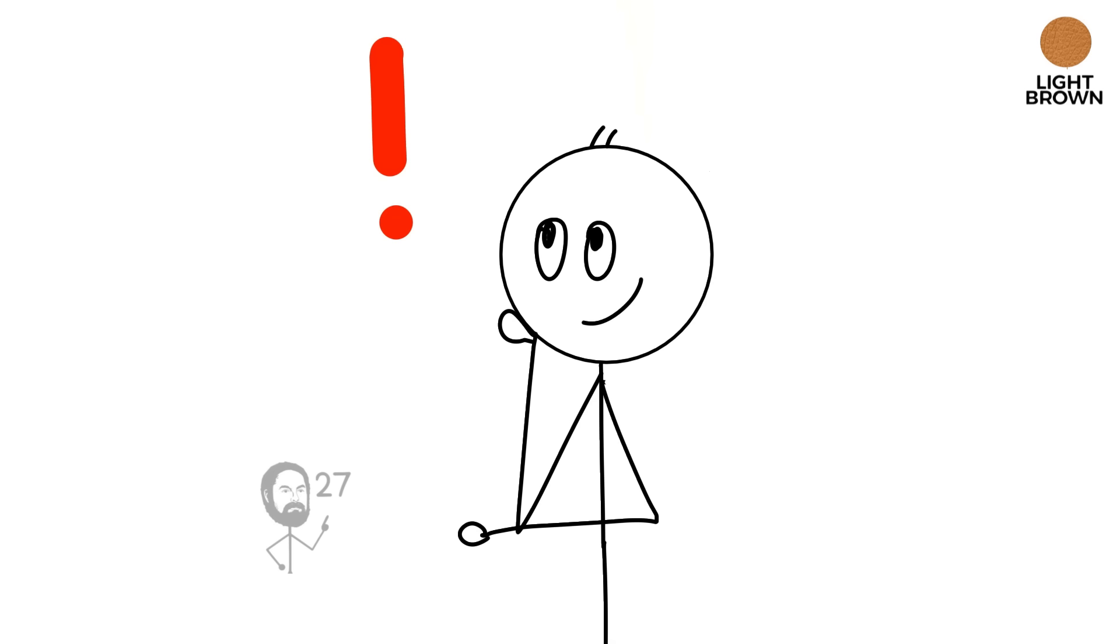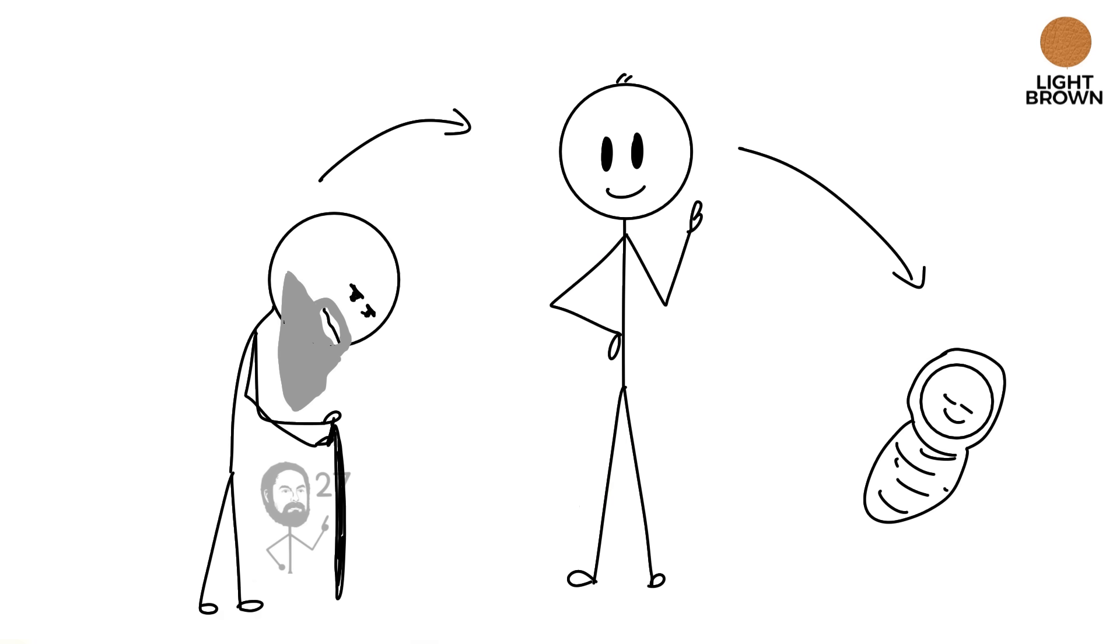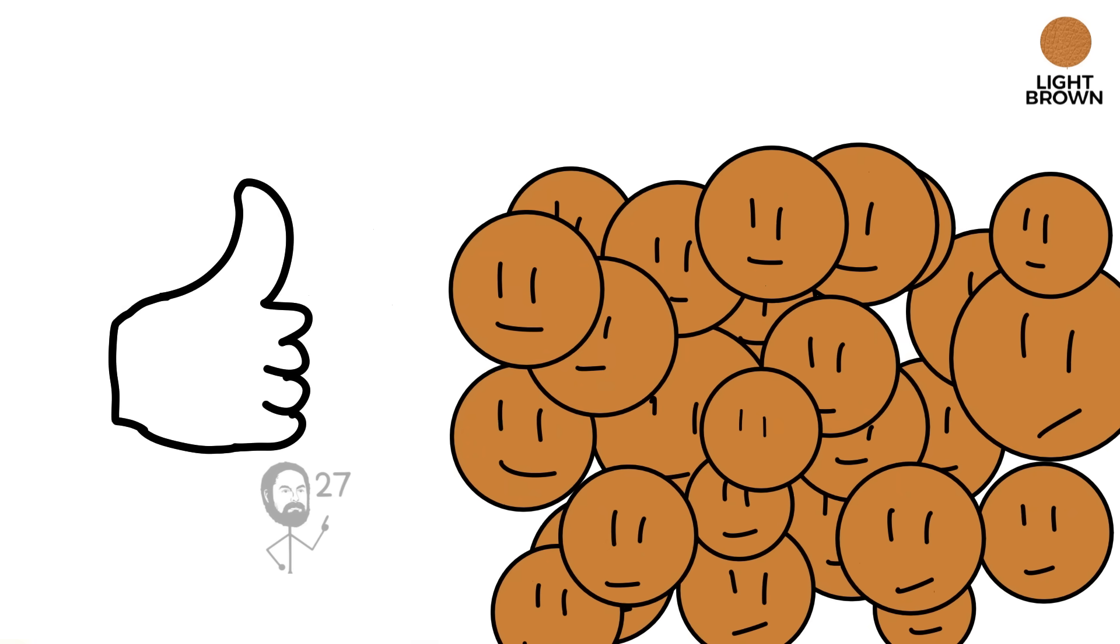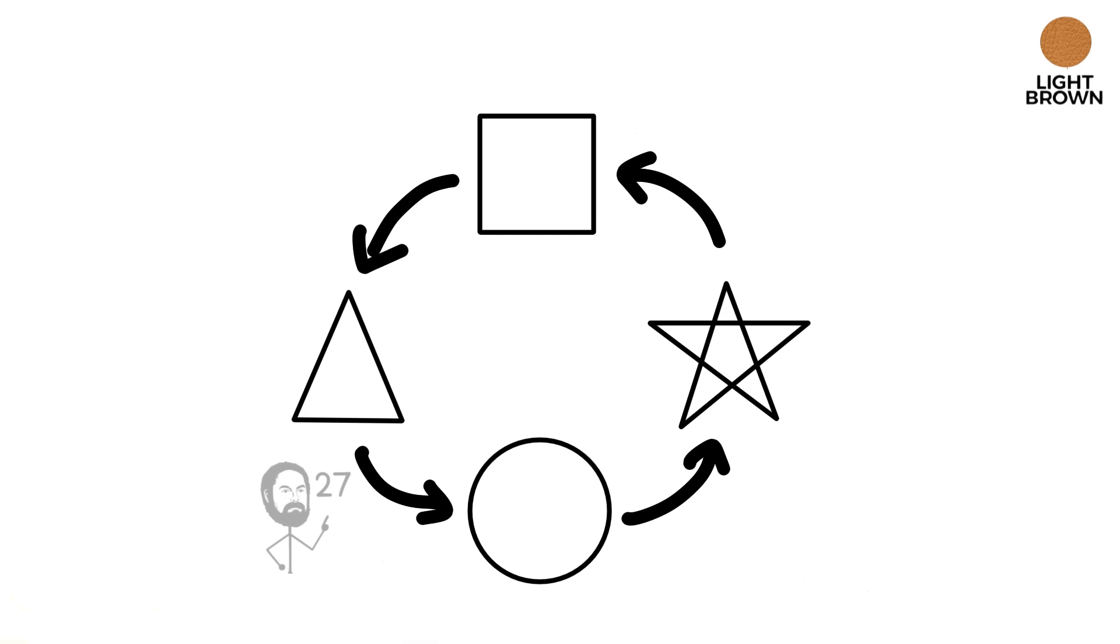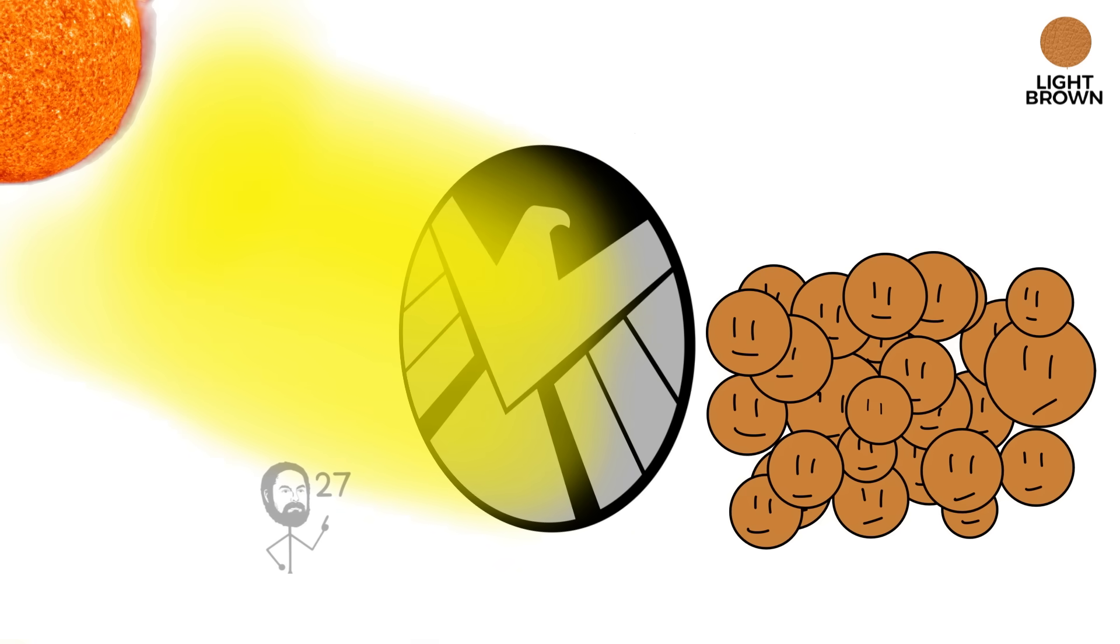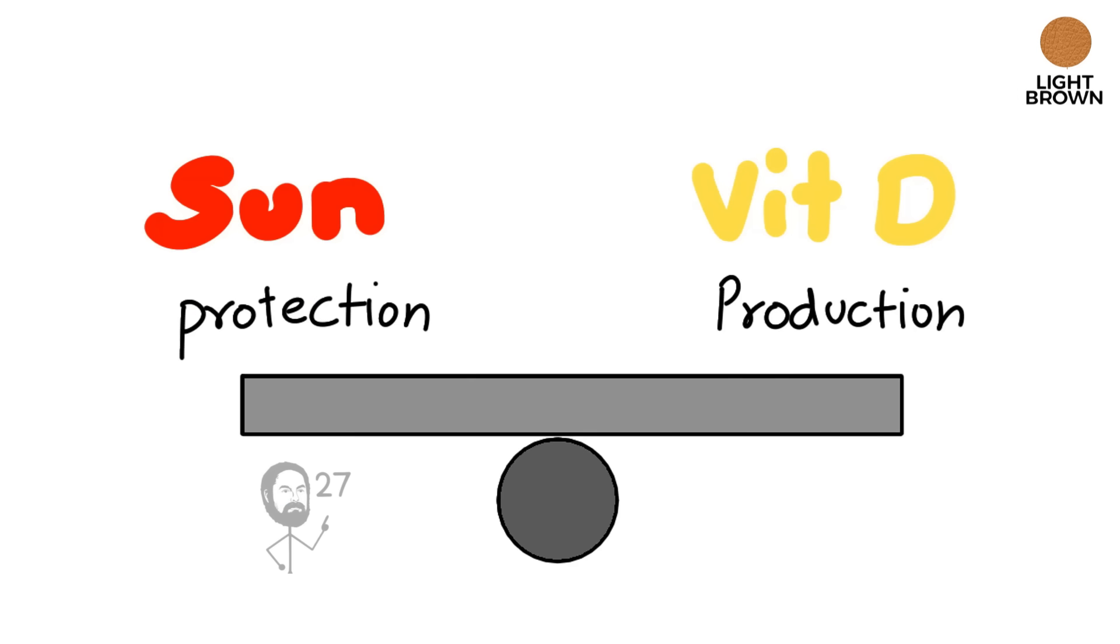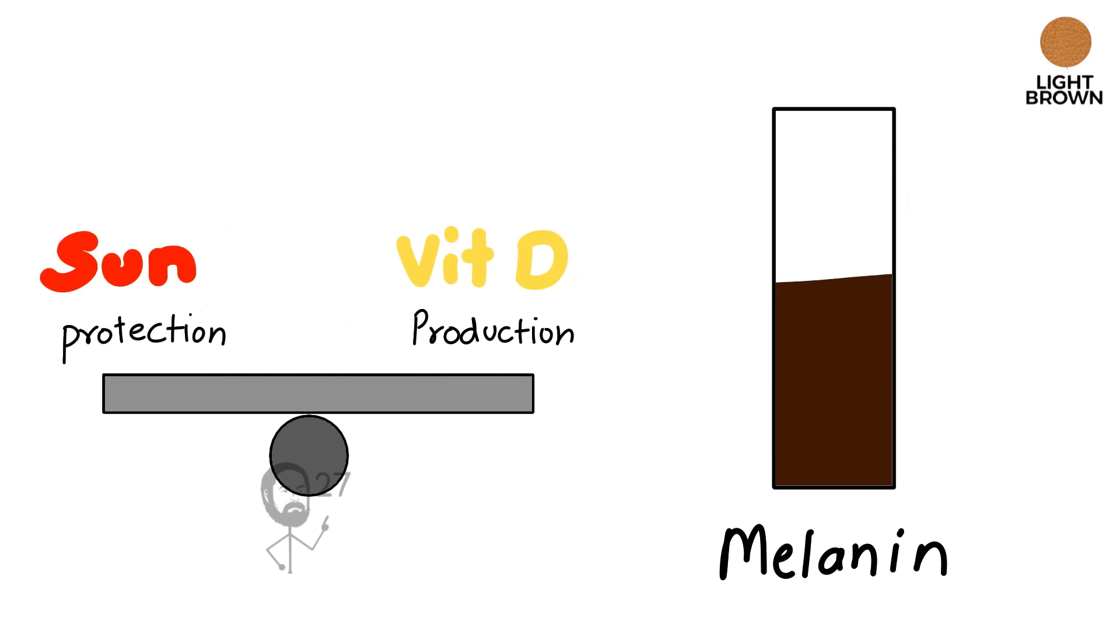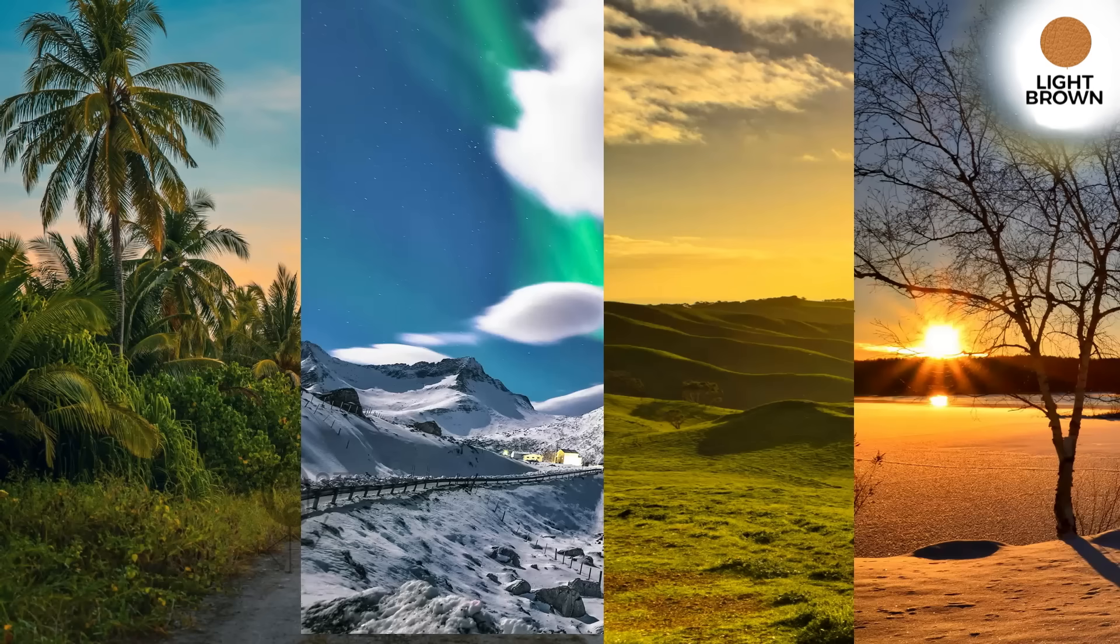An interesting feature of this tone is its ability to tan quickly and evenly without significant risk of burning, which acts as a dynamic response to shifting levels of sun. Over generations, this created an advantage for populations that lived in environments mixing hot summers with cooler, less sunny winters. The adaptability of light golden brown skin allowed people to remain protected during intense sunshine, yet thrived nutritionally when light was weaker. This balance demonstrates how subtle changes in melanin distribution can produce a phenotype finely tuned for resilience across contrasting seasons and landscapes.